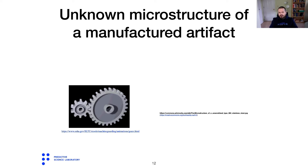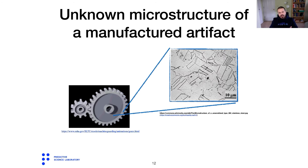Consider a specific example: the example of a bevel gear being spit out of a manufacturing process. Take a gear coming out of this manufacturing process and use an electron microscope to measure or to visualize its microstructure at a specific point. Let's say you do this and you see the picture that is shown on the screen.